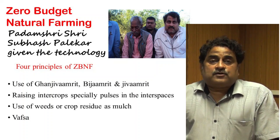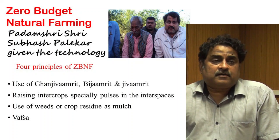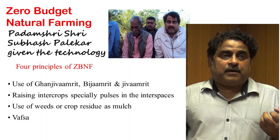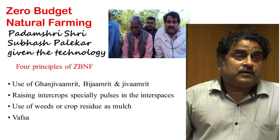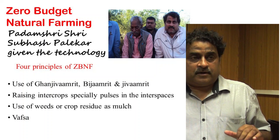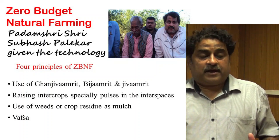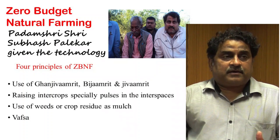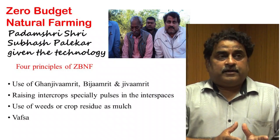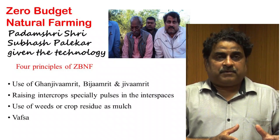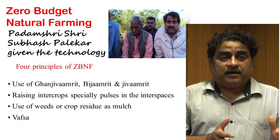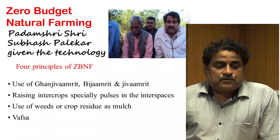In zero budget natural farming, the Wapsa condition means: if crops are sown on a bund, water is applied in one furrow and the other furrow is skipped, so that the plant gets 25% air from the dry side and 25% water from the irrigated side for maximum growth.